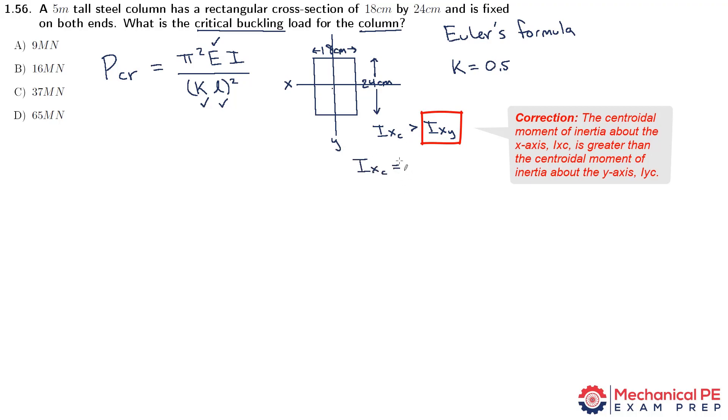Ixc would be bh cubed over 12. Whereas Iyc would be b cubed h over 12. So to get a smaller value, you're going to want to cube the smaller number. If you cube h being 24, you're going to get a larger number. If you cube 18, you're going to get a smaller number. So this is the one we want to use. We don't want to use this.